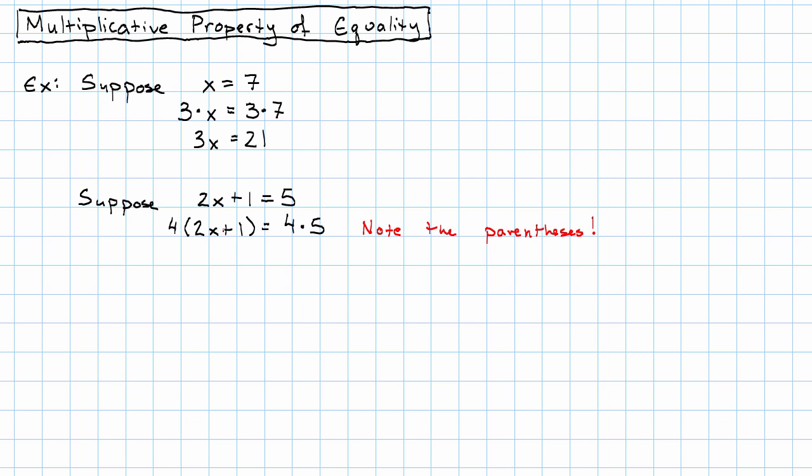So now, to simplify both sides, we just use the distributive property. 4 times 2 is 8, so we have 8x plus 4 equals 4 times 5 is 20.